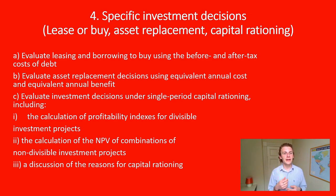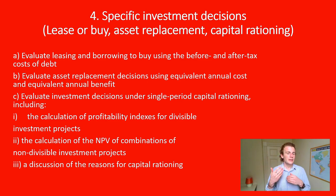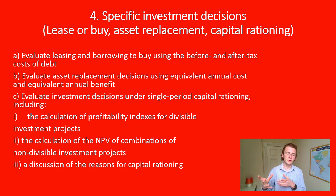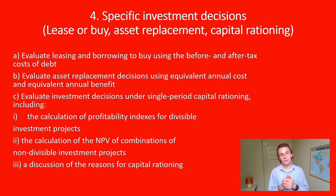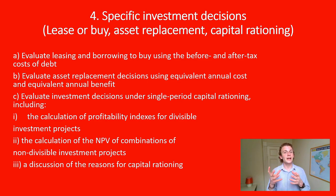For part B, evaluate asset replacement decisions using equivalent annual cost and equivalent annual benefit — a cost-benefit analysis. Using a van as an example: what are the costs to keep the old van going versus the benefits of keeping it? On the flip side, you might scrap the old vehicle for a positive cash flow, then purchase a new one as a cash outflow, and then weigh up the ongoing benefit versus cost. These are the types of scenarios you could get in a financial management exam.